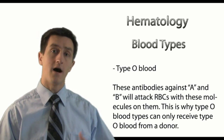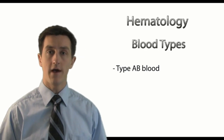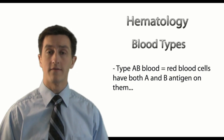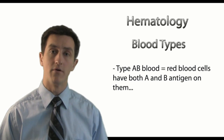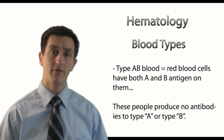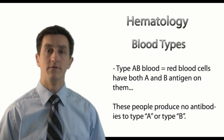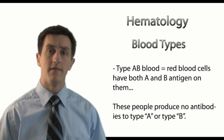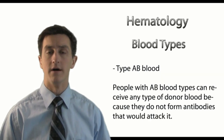Now let's take the opposite end — type AB blood. In that case you have both the A and the B antigen, which refer to specific proteins on the red blood cell membrane. What occurs here is that you do not produce antibodies to your own antigens. So because of that, you do not have type A or type B antibodies, and therefore you can receive basically any type of blood from any donor.